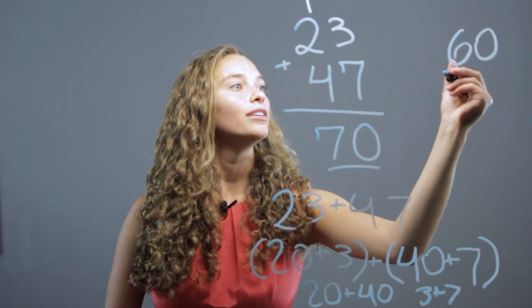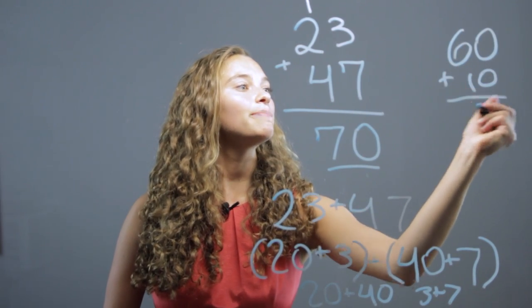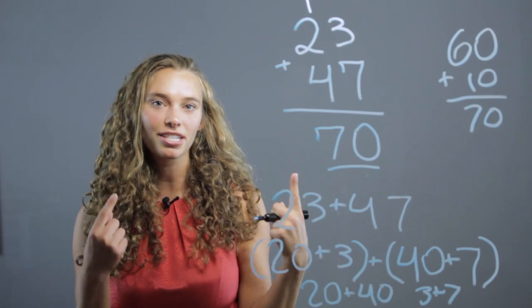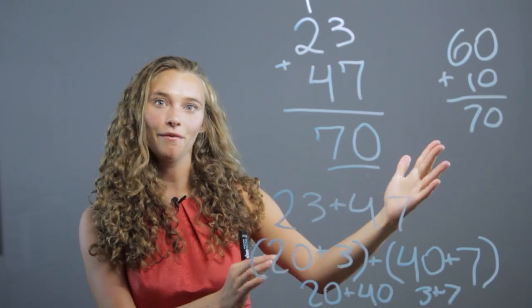So that's just sixty plus ten, which makes seventy, which is easier to visualize and sometimes to understand in our head when we use that regrouping method.